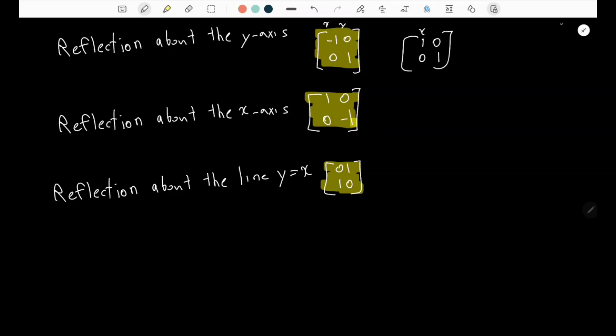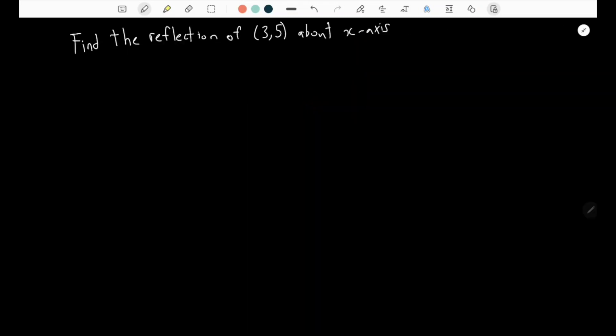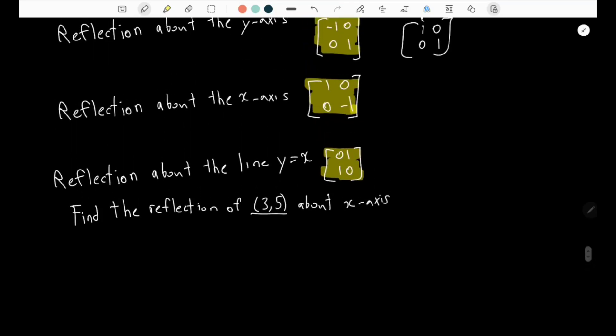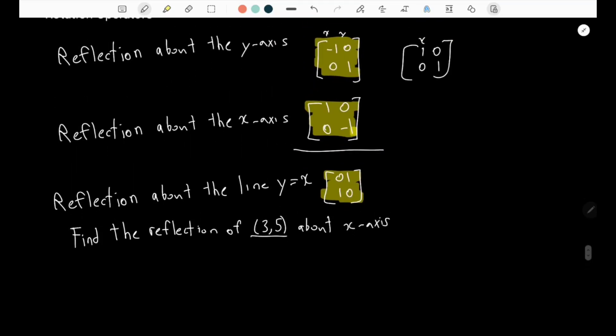Now let's look at a quick example. Here they're asking for the reflection of this matrix about the x-axis. So the x-axis matrix which you have to memorize is this one.